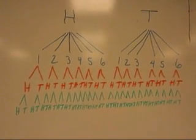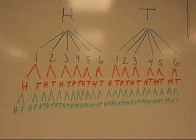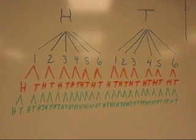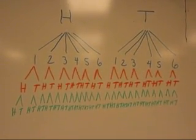This would be the tree diagram for flipping a coin, followed by rolling a die, followed by flipping a second coin, followed by flipping a third coin.